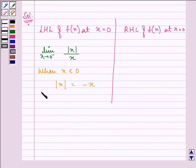So we have the limit as x approaches 0 from the left-hand side of (-x)/x, which gives us the value -1.